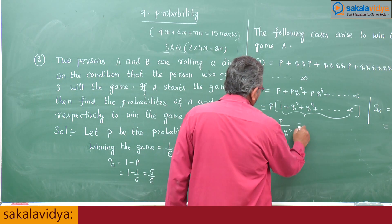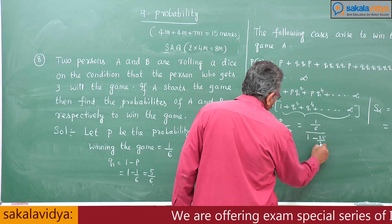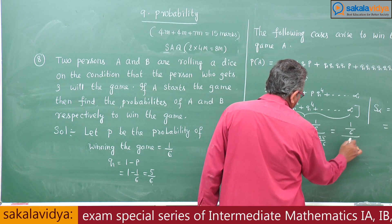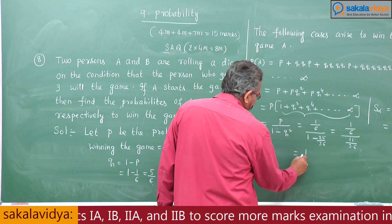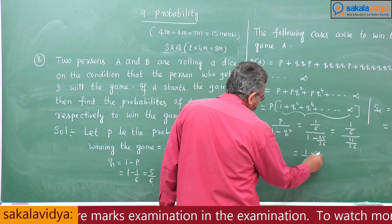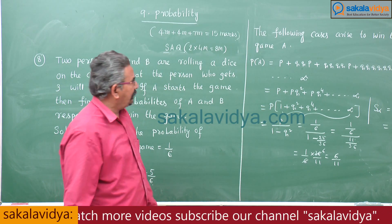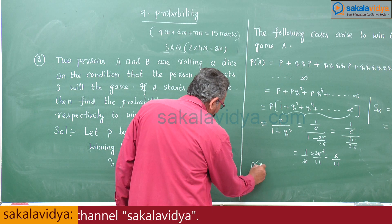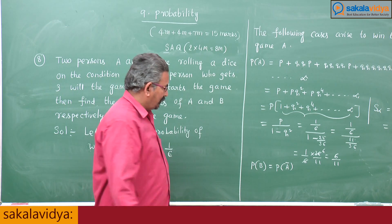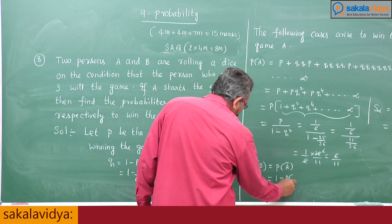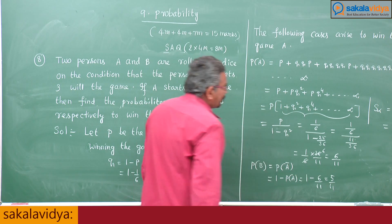Substituting P equals 1 by 6 and Q squared equals 25 by 36: P of A equals (1 by 6) divided by (1 minus 25 by 36), which is (1 by 6) divided by (11 by 36). This gives 1 by 6 multiplied by 36 by 11, which equals 6 by 11. So the probability of A winning the game is 6 by 11. The probability of B winning is 1 minus P of A, which is 1 minus 6 by 11, equal to 5 by 11.